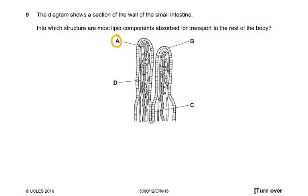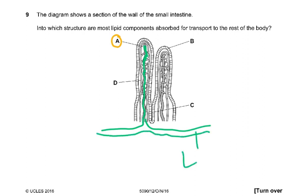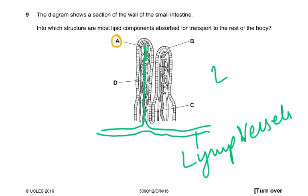Question nine: in which structure are most lipid components absorbed for transport to the rest of the body? The answer is the lacteals. The lacteals then form the lymphatics, or lymph vessels. A helpful mnemonic: L for lymphatics, L for lipids, and L for lacteals.